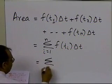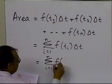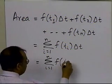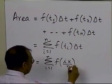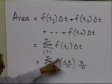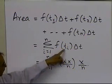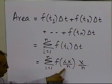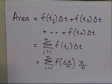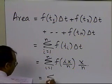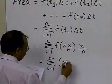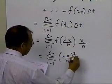What is t sub i? We know t0 = 0, t1 = x/n, t2 = 2x/n, so t sub i = ix/n, and delta t = x/n. So the summation becomes the sum from i = 1 to n of f(ix/n) times (x/n). Since our function is t squared, the argument squared gives (ix/n)² times (x/n).